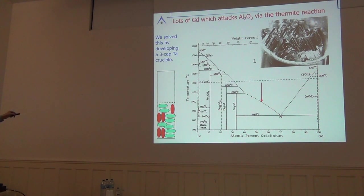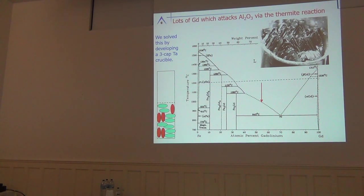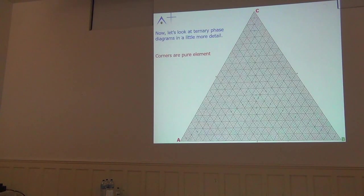After arc melting, placing material in the tantalum crucible, heating, cooling, and decanting, you get beautiful faceted single crystals of gadolinium iron 2.